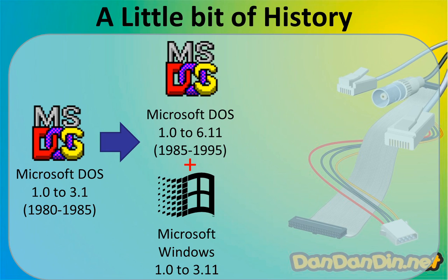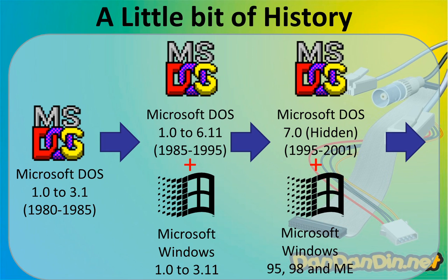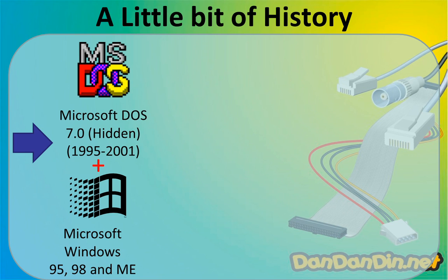In 1995 Microsoft announced what they called a revolution — but it was not really a big revolution. They just hid the DOS so the user could not see it anymore, making it easier to operate. This gave us Windows 95, 98, and Millennium Edition. This approach was not very efficient — it was very easy to have a blue screen, a computer crash, because the core of the operating system was 16-bit while other programs were 32-bit. It was not optimized.